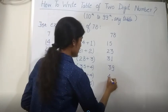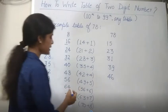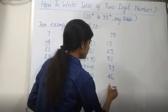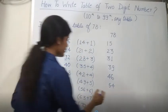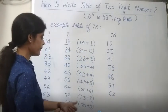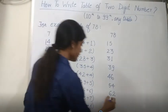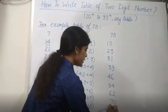42 plus 4, that is 46. 49 plus 5, that is 54. 56 plus 6, which is 62. Then 63 plus 7, that is 70. And 70 plus 8, that is 78.